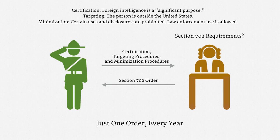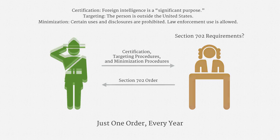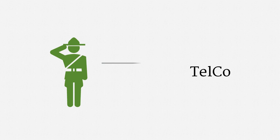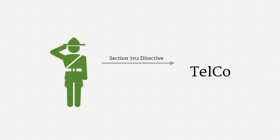Once the judge is satisfied, they issue a Section 702 order. That's just one order, and it's good for an entire year. The current practice is that just about the same filing gets submitted year after year, and judges keep approving it year after year. Once the government has its Section 702 order for the year, it can then issue so-called Section 702 directives. These work a lot like warrants or wiretap orders, but there's no court involved. They get served on a company.